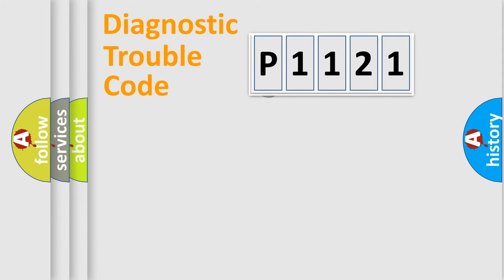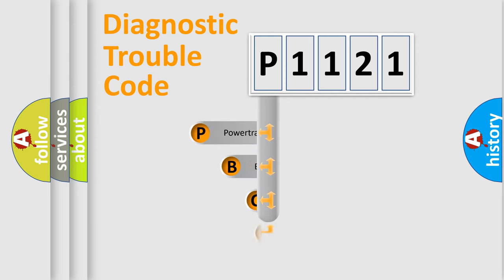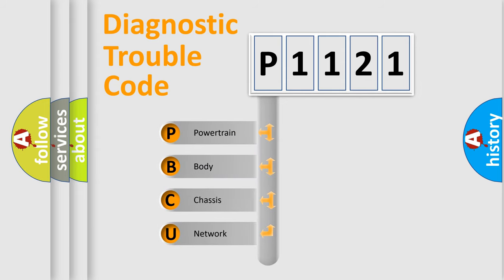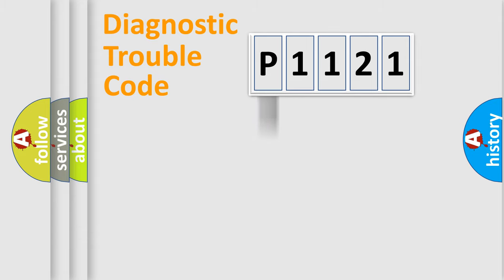First, let's look at the history of diagnostic fault code composition according to the OBD-2 protocol, which is unified for all automakers since 2000. We divide the electric system of an automobile into four basic units: Powertrain, Body, Chassis, and Network. This distribution is defined in the first character of the code.